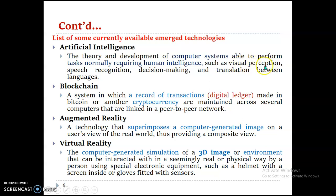Because a machine has its own intelligence, it must have visual perception — visualizing something from the environment — speech recognition, decision-making, and the ability to translate between languages. If the machine itself translates from one language to another, that is also artificial intelligence. So we can say AI is a human-made machine that has its own intelligence.